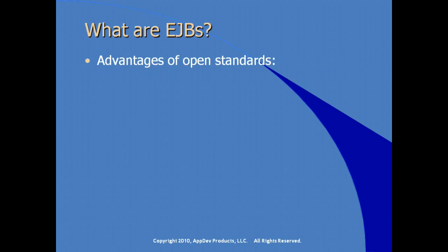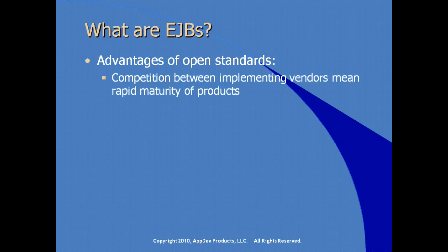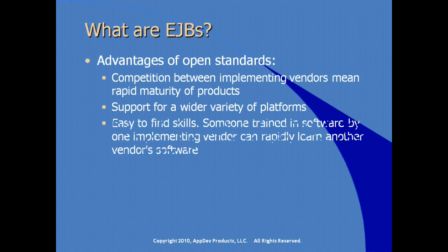EJBs are, of course, an open standard. The advantages include competition between implementing vendors driving rapid product maturation, support for a wider variety of platforms without being tied to one vendor, and easier access to skilled developers. Someone trained with one implementing vendor can leverage those skills to learn another vendor's software.